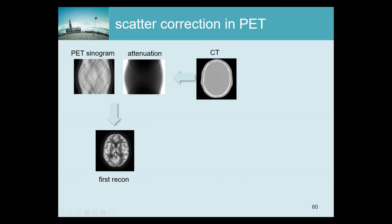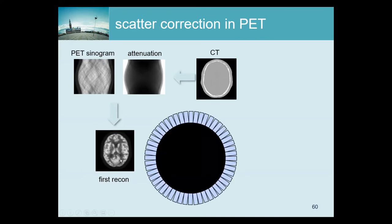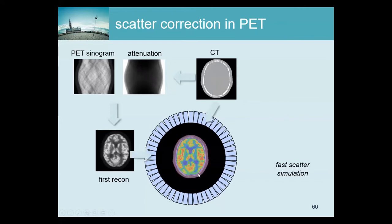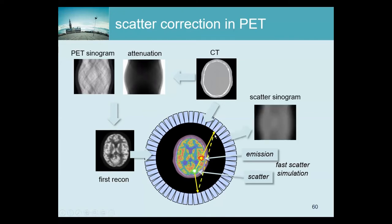We assume it's not too bad, so based on this we can estimate the scatter. We have an estimate of the activity and an estimate of the attenuation image, so we can put that into the simulator, and the simulator will simulate how the scatter is being formed. For example, two photons are emitted: one goes directly into the detector, the other is scattered and goes elsewhere. With Monte Carlo that would take forever but would be very accurate. Methods have been developed to do this much faster with variance reduction techniques, so now we get a scatter sinogram.